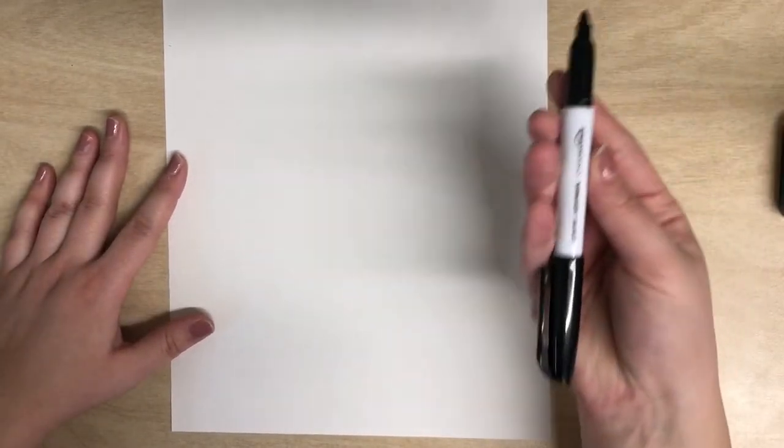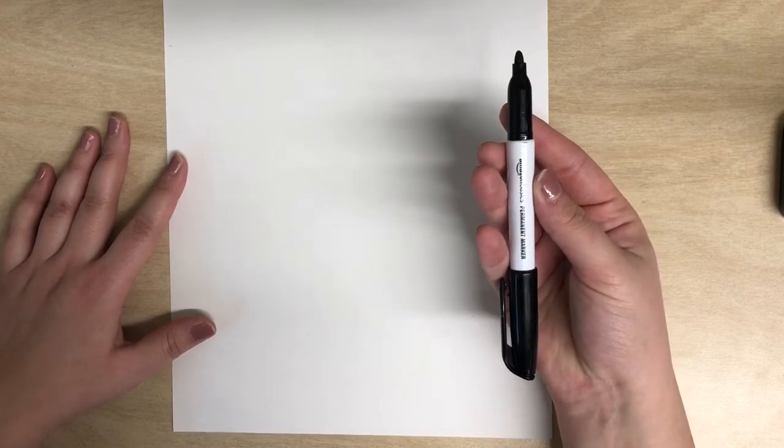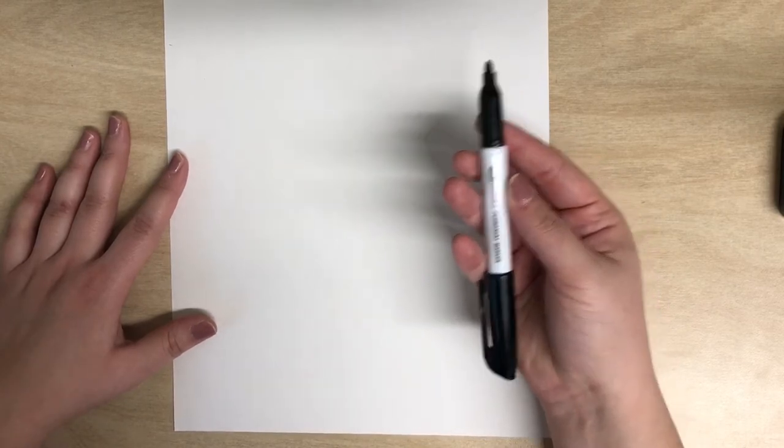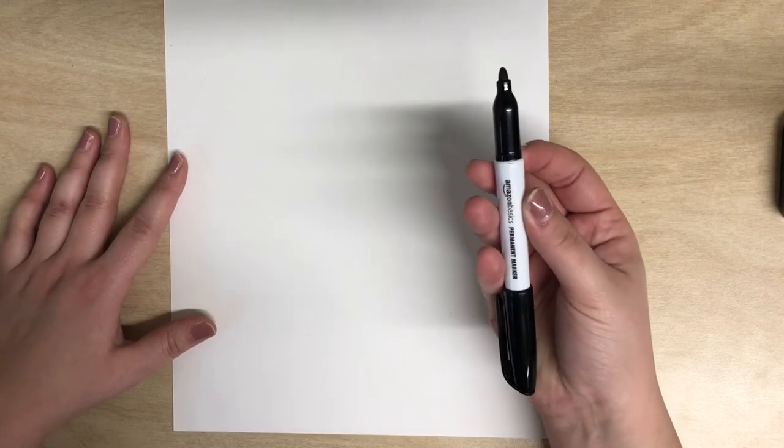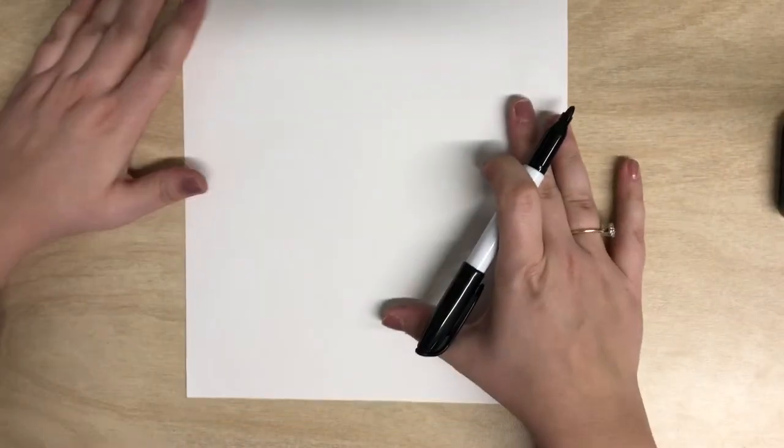All right, today we are going to draw and paint sunflowers like Vincent van Gogh. I will be using a Sharpie to show you how to draw this, but you will be using a pencil and trying your best to draw really lightly.